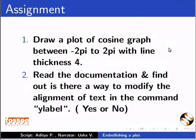Here are some self-assessment questions for you to solve. Draw a plot of cosine graph between minus 2pi to 2pi with line thickness 4. Read the documentation and find out, is there a way to modify the alignment of text in the command ylabel?